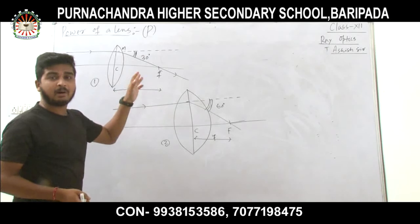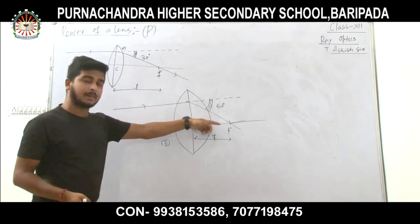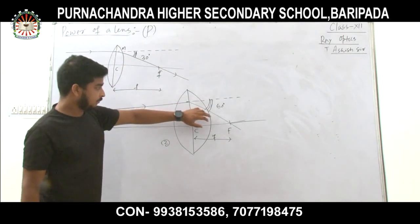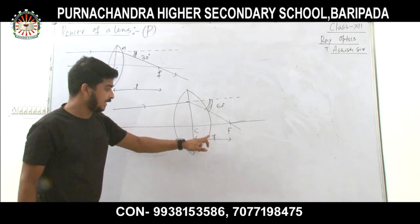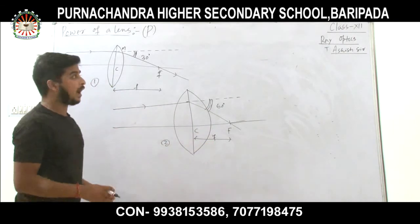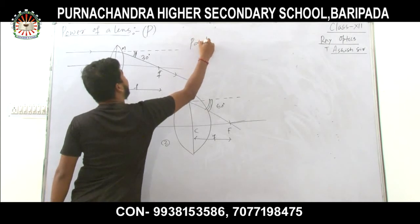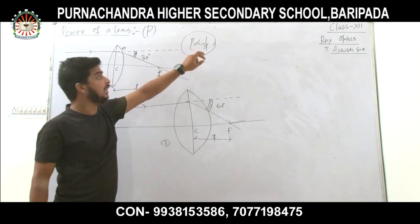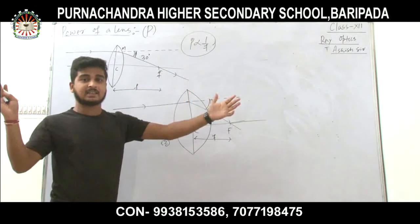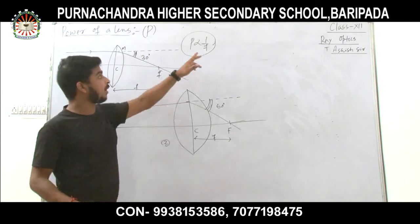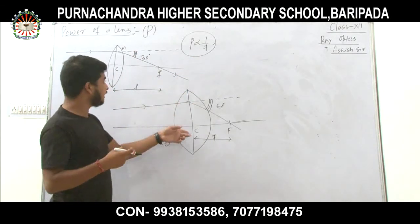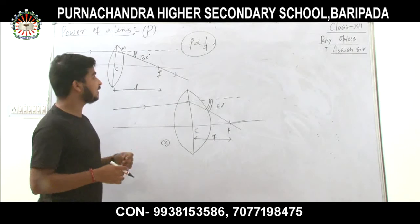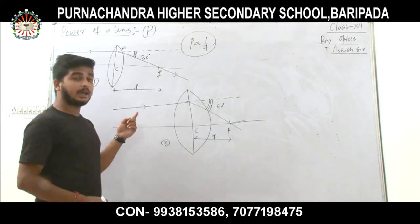The power of the lens is its ability to bend the ray of light, and this ability is known as power. Power of a lens is the reciprocal of focal length: if focal length increases, power decreases; if focal length decreases, power increases.